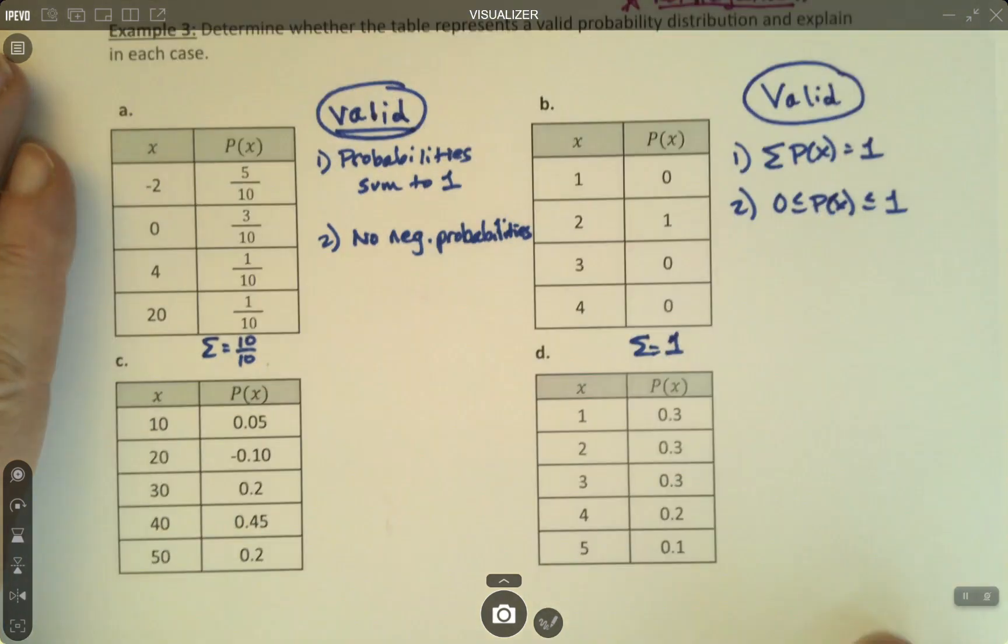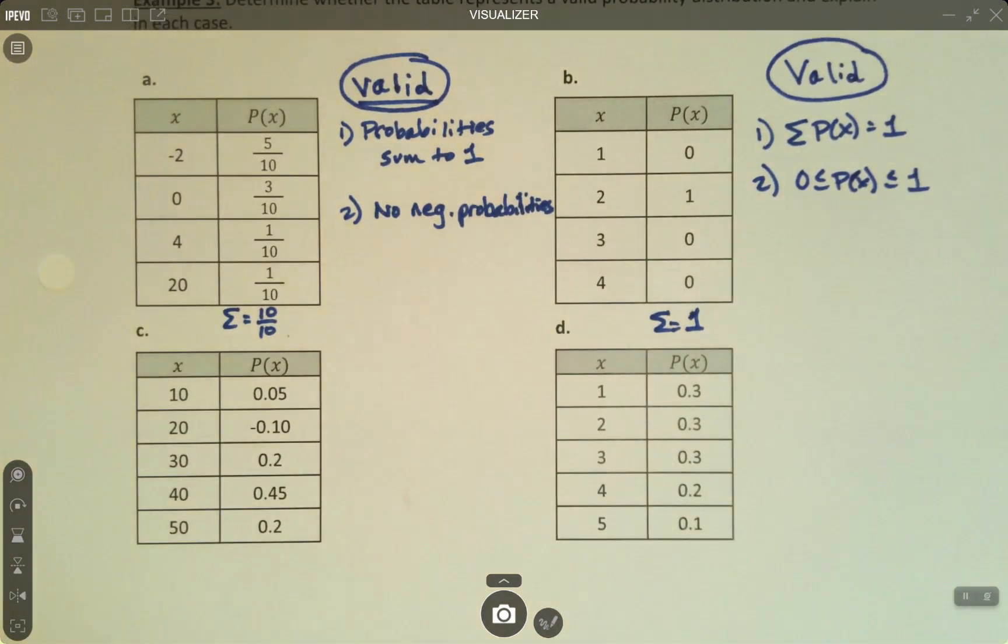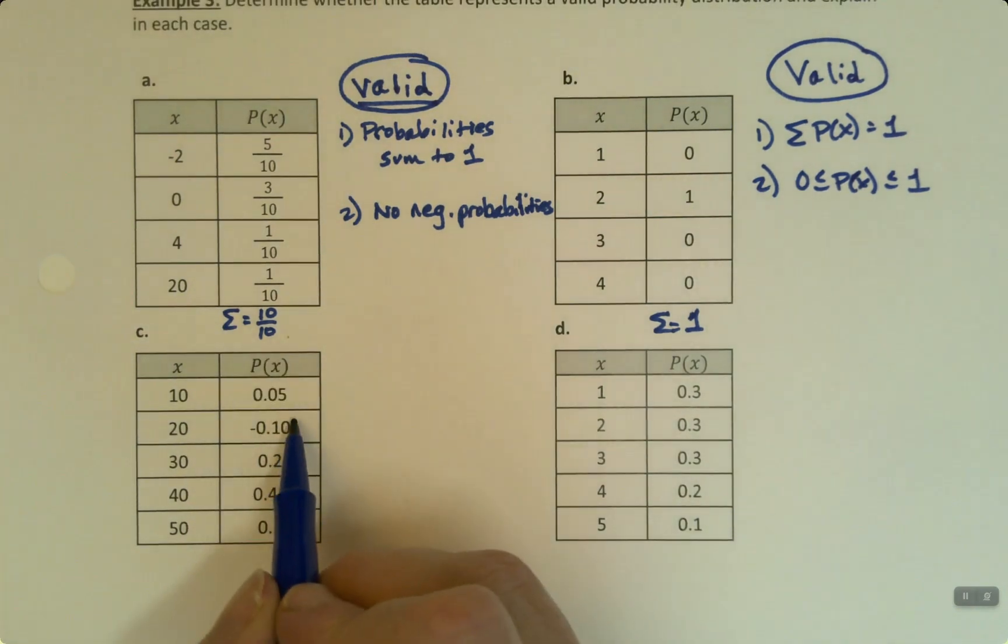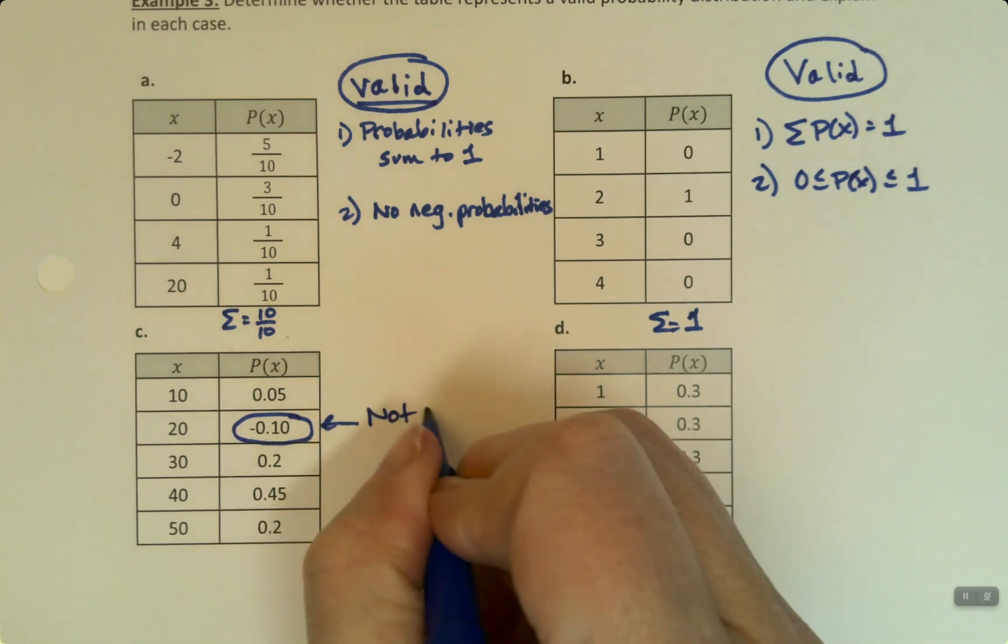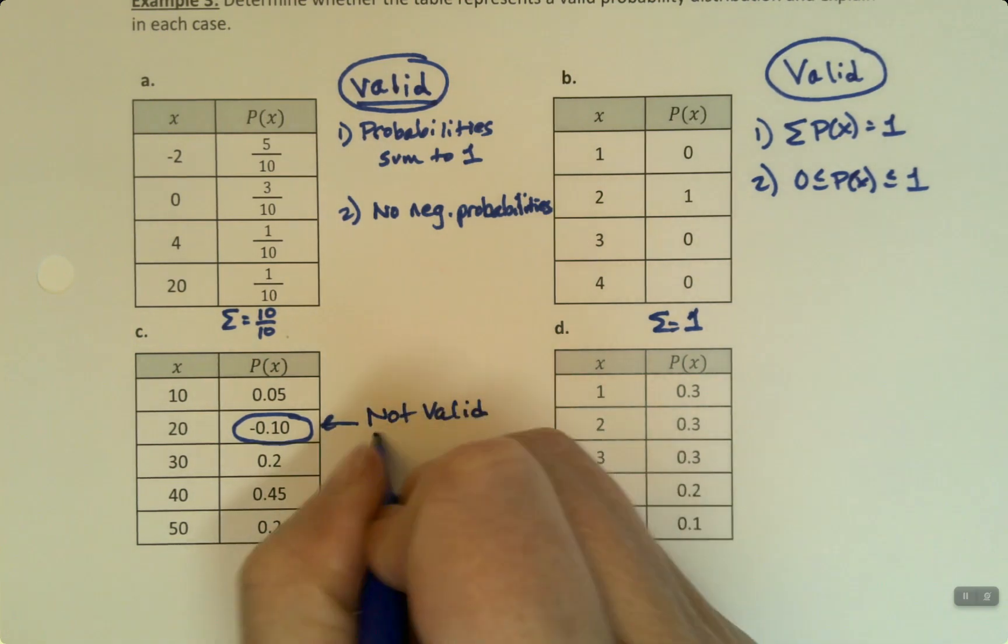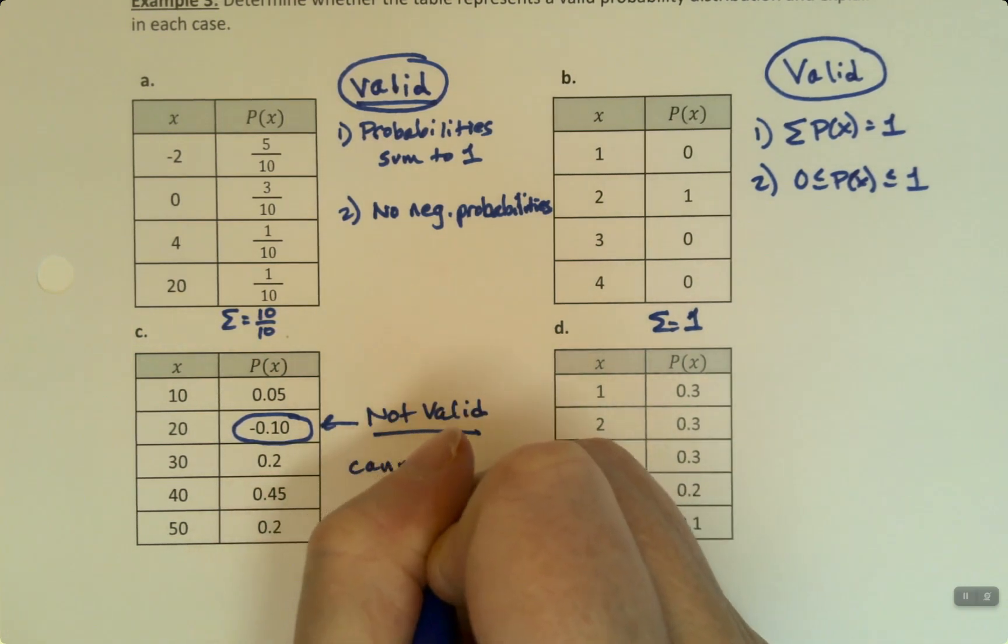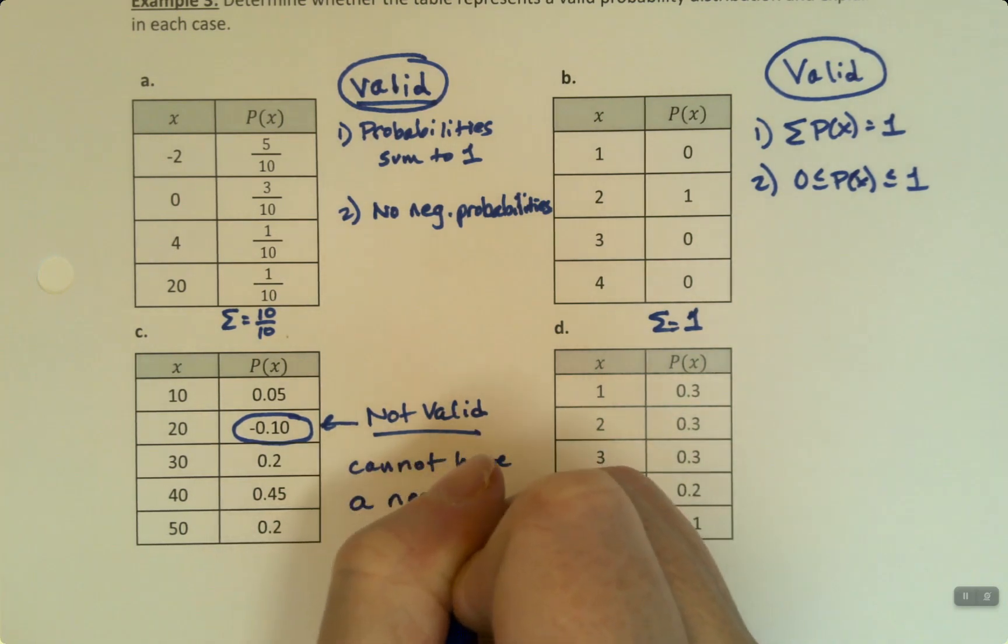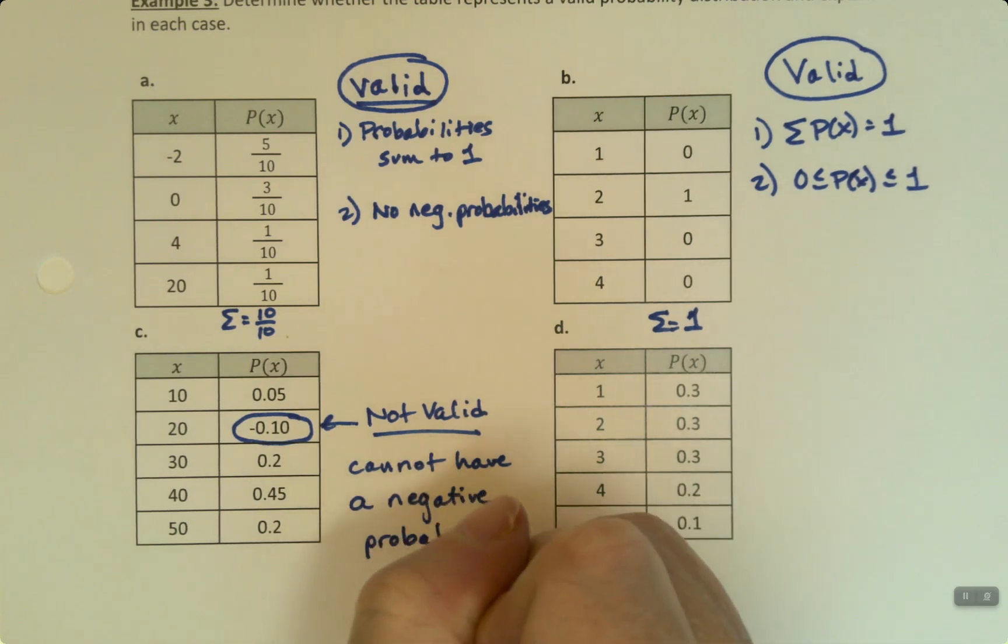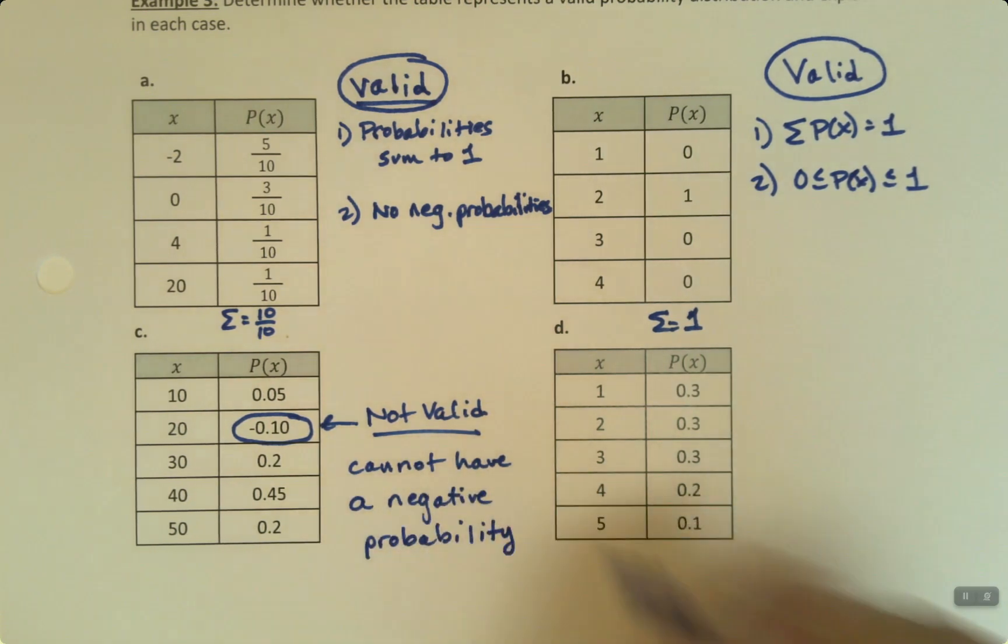I'm going to bet the other two are not. And they're not. I can see C is no good. C's got a problem right here. That's not valid. And I'm done. I don't have to check anything else. You cannot have a negative probability. It is a big no-no. It's impossible. So you're done.